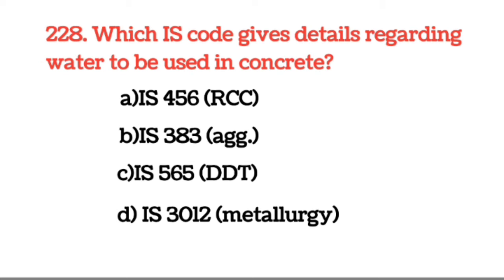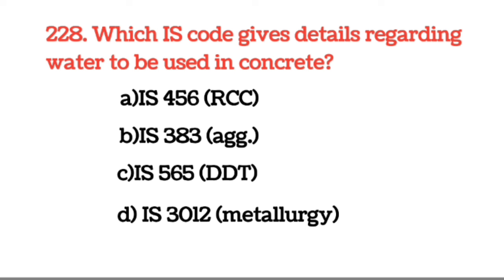Next question: Which IS code gives detail regarding water to be used in concrete? Answer: IS 456. IS 456 जो है इस बात को बताता है कि water जो है वह concrete के साथ use किया जाता है। IS 383 aggregate से related है, IS 55 DDT से related है, और IS 3012 metallurgy से related है।